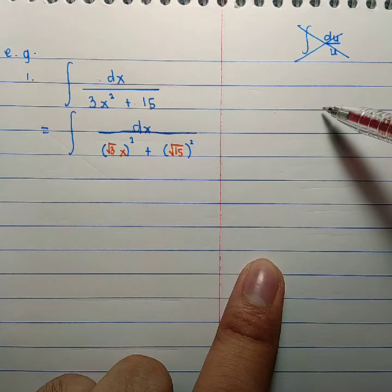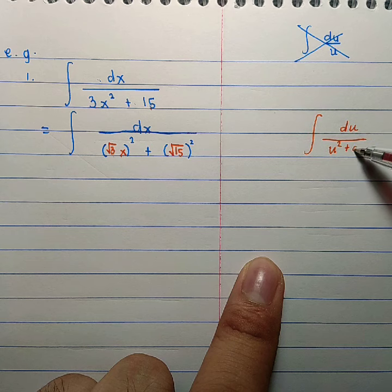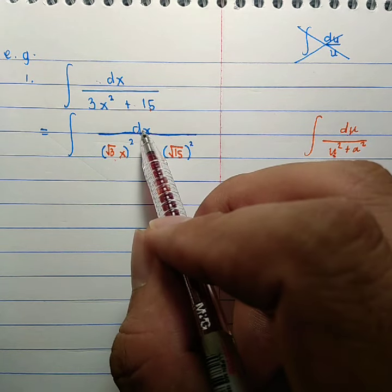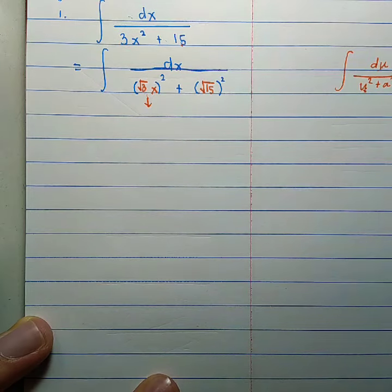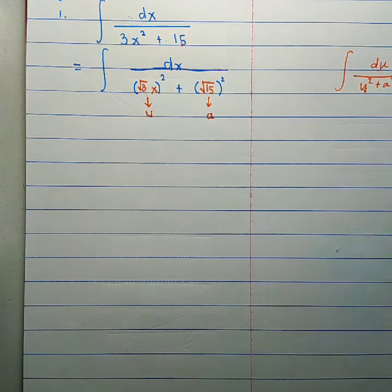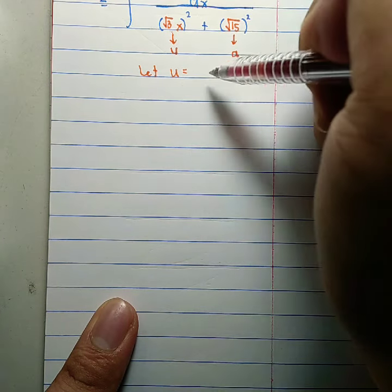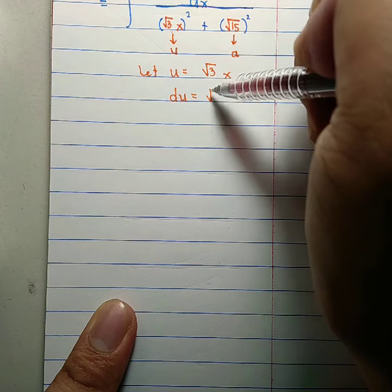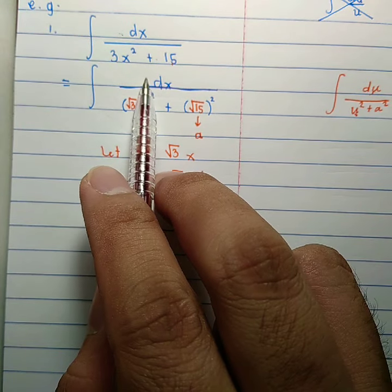Recalling our formula — integral of du over u squared plus a squared — there is a one-to-one correspondence: u = √3·x and a = √15. Never interchange these. Let u = √3·x, so du = √3·dx. Since √3 does not appear in our integrand, we insert the neutralizing factor of 1/√3 in front.